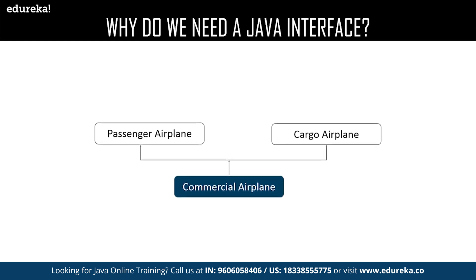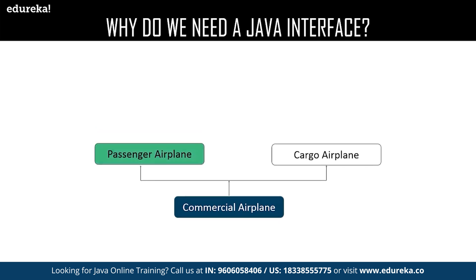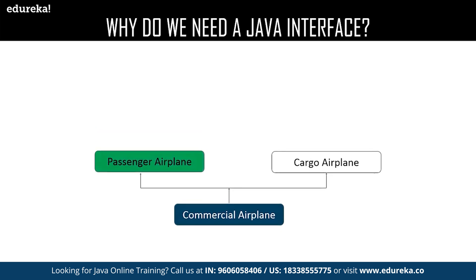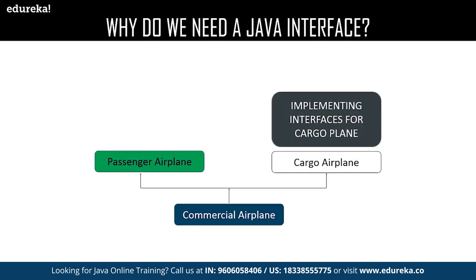But you can make it possible by making Java feel that it is inheriting one plane and implementing the methods present in the other one. It is like building a commercial plane which takes both passengers and cargo luggage. Interface is like making a bigger plane which could do both tasks without interfering with the components of one another, instead just borrowing the methods which are present in the interface class.